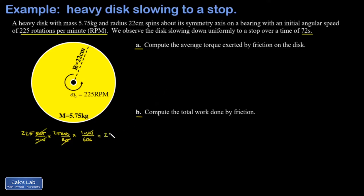In part a, I want to get the average torque exerted by friction on the disc. The strategy here is we're going to use the rotational equivalent of Newton's second law: τ = Iα, torque equals moment of inertia times angular acceleration. We can certainly compute the moment of inertia using the standard geometric formula for a disc, and we can get the average angular acceleration by looking at the rate of change in the angular speed.